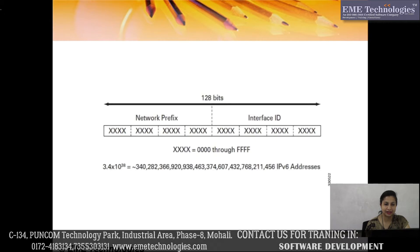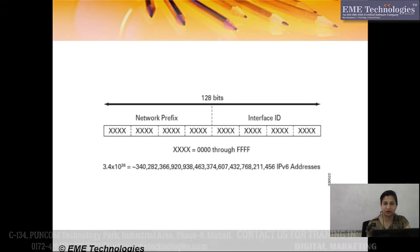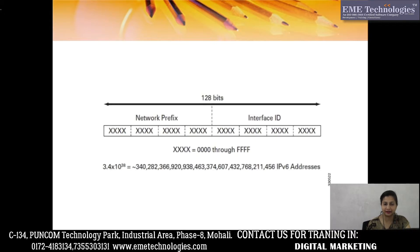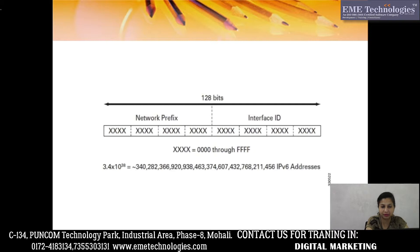IPv6 has 128 bits in total, with an interface ID component. In IPv4 we had a total of 32 bits including network and host bits. The total number of IP addresses possible from IPv6 is 3.4 into 10 raised to the power 38.